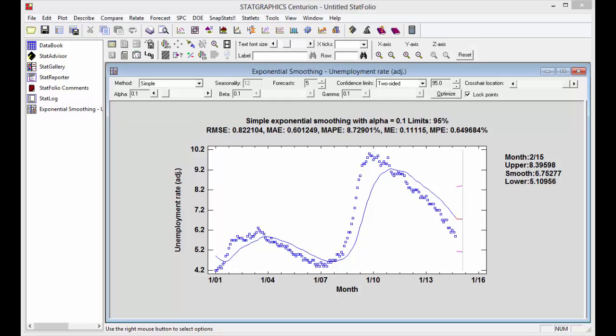So let's make some changes. Let's go to the statlet toolbar and increase the number of forecasts to 12. Let's move the crosshair cursor to the far right so that the forecasts on the right of the graph are for September 2015.